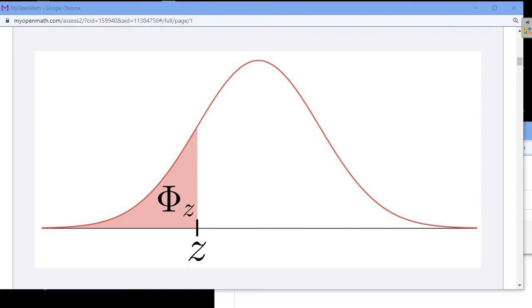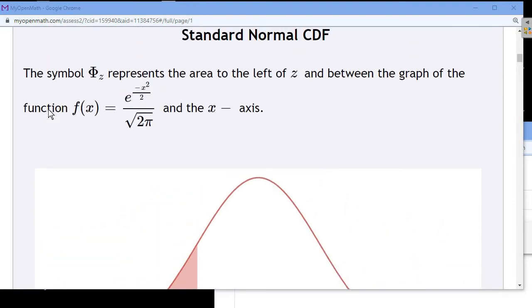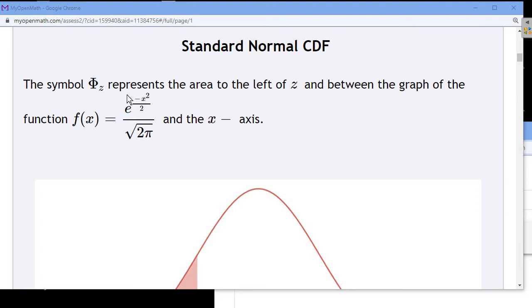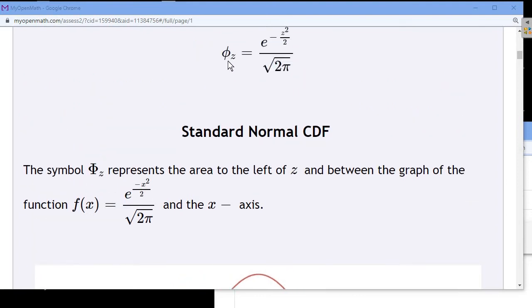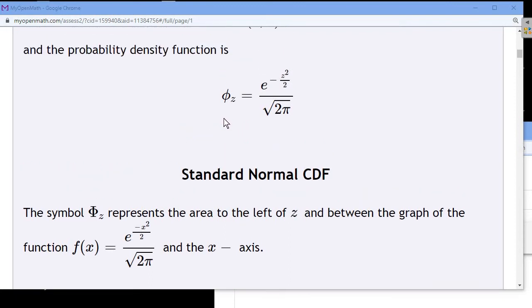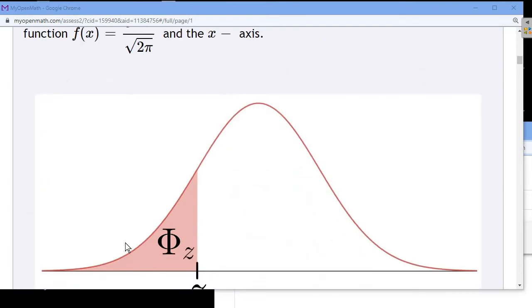That is the lowercase phi. On the other hand, we also have the uppercase phi of z. So you can see the difference between lowercase phi and uppercase phi here. The difference between those symbols mathematically in this statistics class is that the lowercase phi represents the density function or just the actual bell curve here, the actual curve itself.